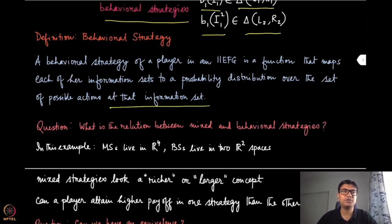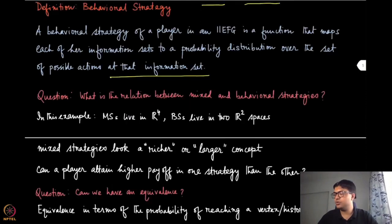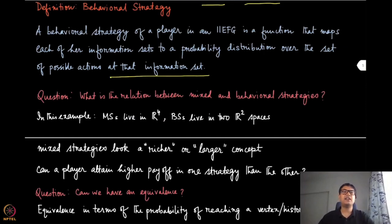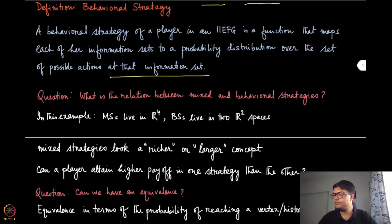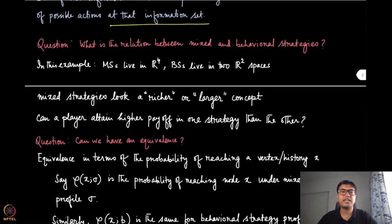The difference between this behavioral strategy and the traditional mixed strategy is that we go one information set at a time and randomize at an information set level. One observation is that the mixed strategies here are living in a higher dimensional space — R4 because there are four pure strategies and you are putting probability masses on them — while the behavioral strategies are living in two separate two-dimensional spaces. So it seems like mixed strategies are a richer concept, but we will see that's not completely true for all sorts of games.